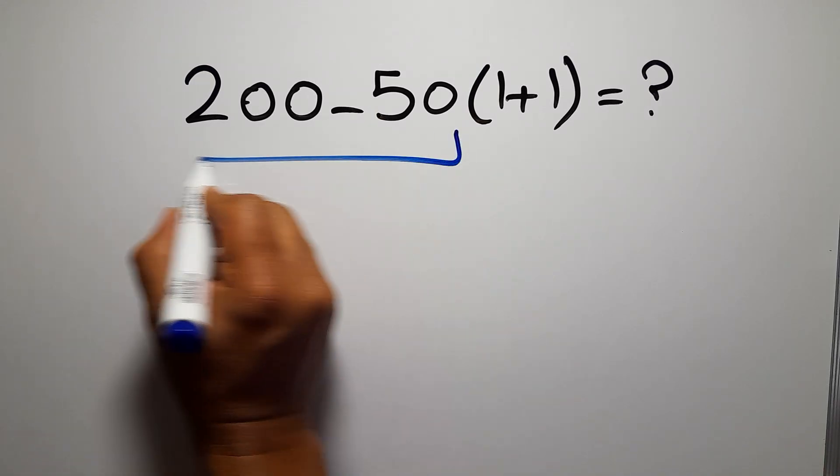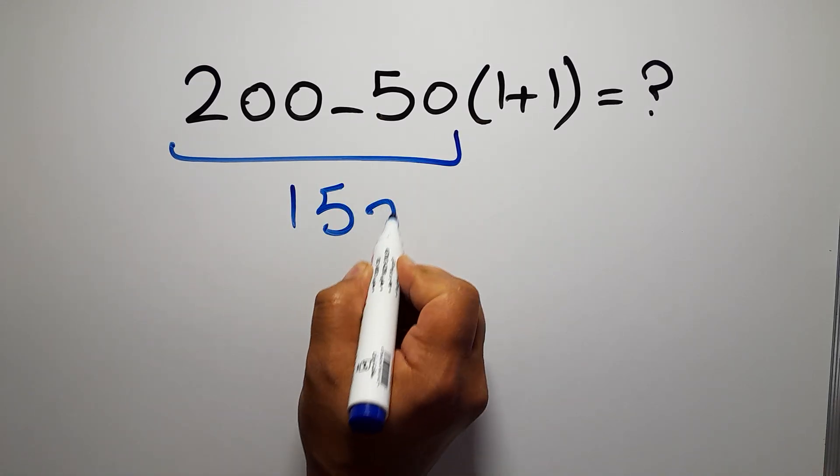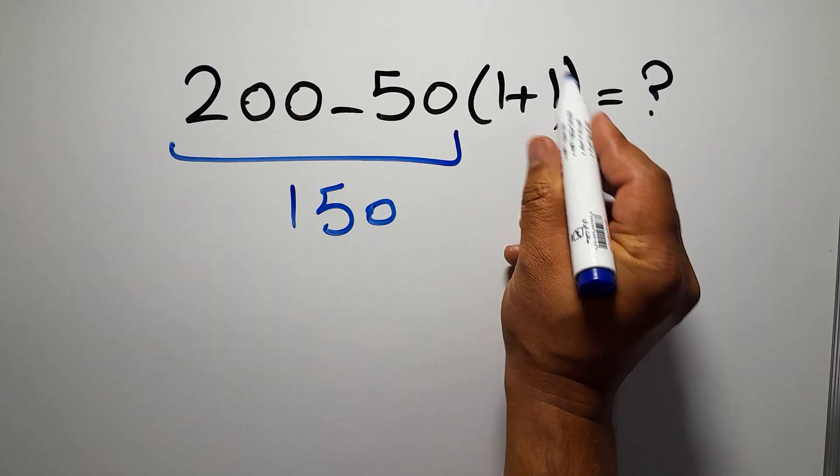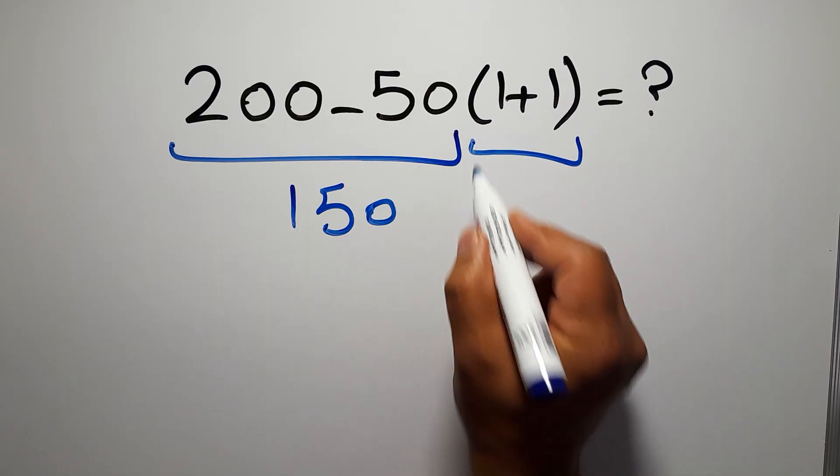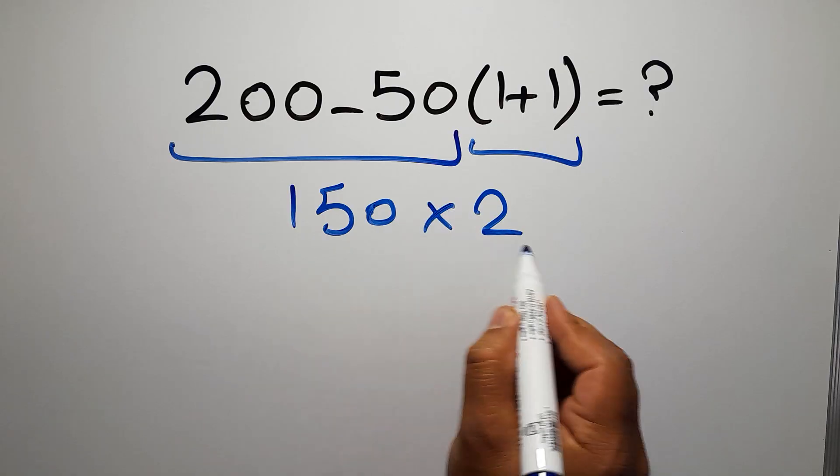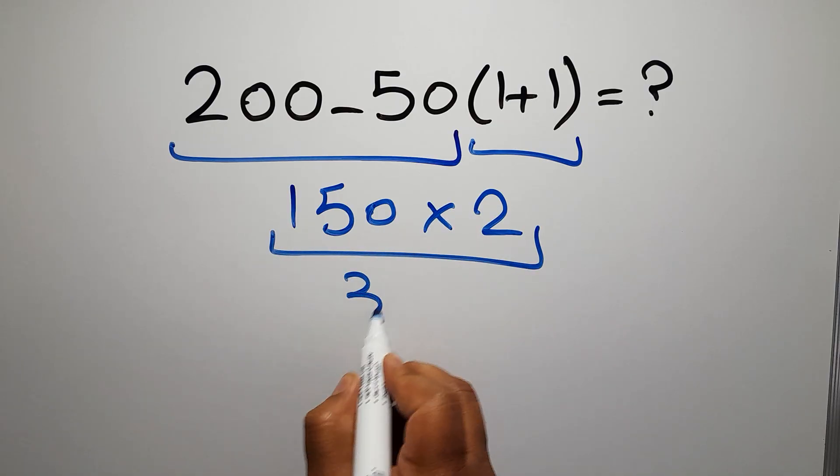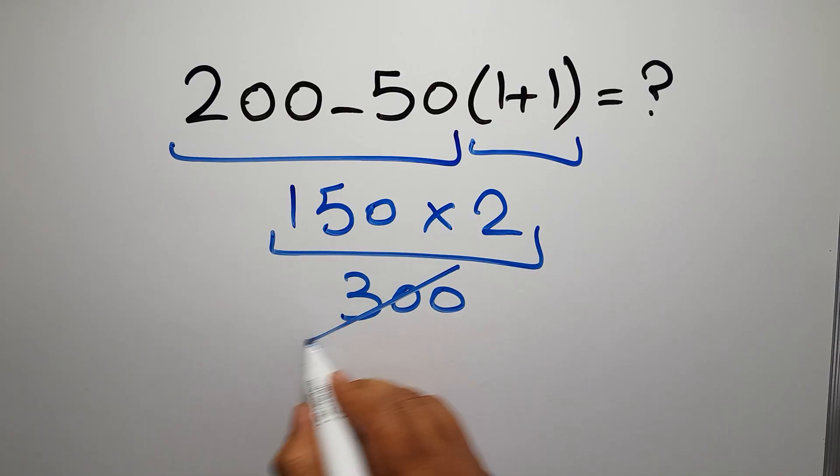200 minus 50 gives us 150, and 150 times these parentheses. Inside these parentheses, we have 1 plus 1, which equals 2. So 150 times 2 is just 300, but this answer is not correct,